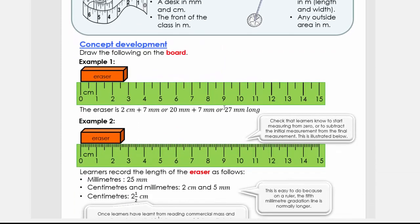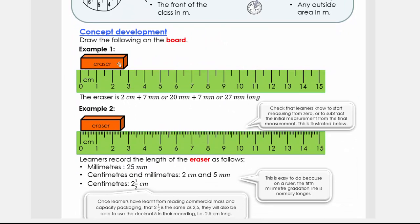Okay, welcome back. So we're going to look at the concept development. So what we're first going to do is we're going to use a ruler where we don't have the millimeter gradations on it. So what we're going to do is we only have centimeters on it and then you can see a half centimeters.